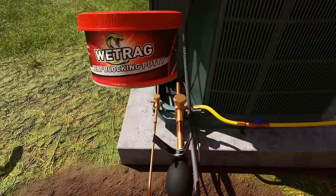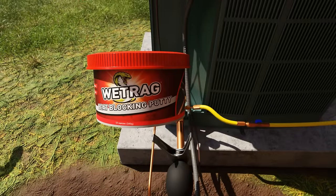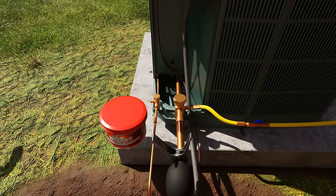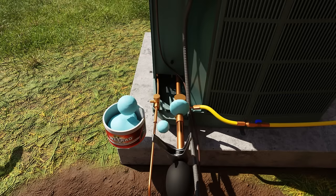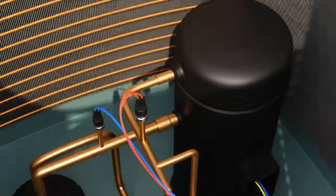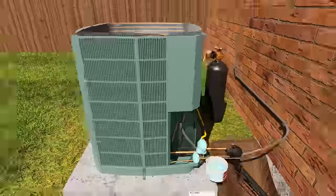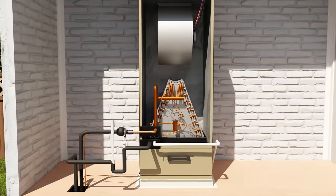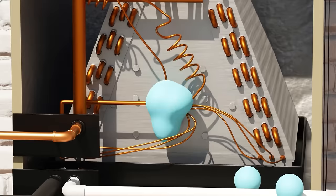To protect the critical system components while brazing, we're showing using wet rag heat blocking putty from Refrigeration Technologies. We use this to protect things like service valves, the paint on the compressor, expansion valves, and sensing bulbs.